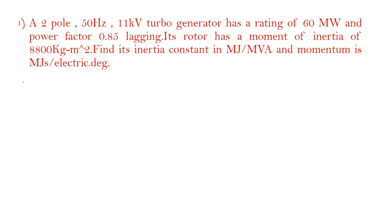What are the datas given in the problem? The datas given is pole is given, frequency 50 Hz is given, volt is 11 kV is given, power 60 MW is given, power factor 0.85 lagging is given. Then, moment of inertia I is equal to 8800 kg m² is given.